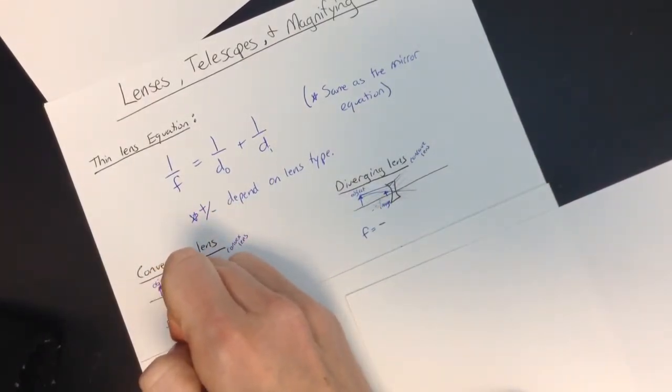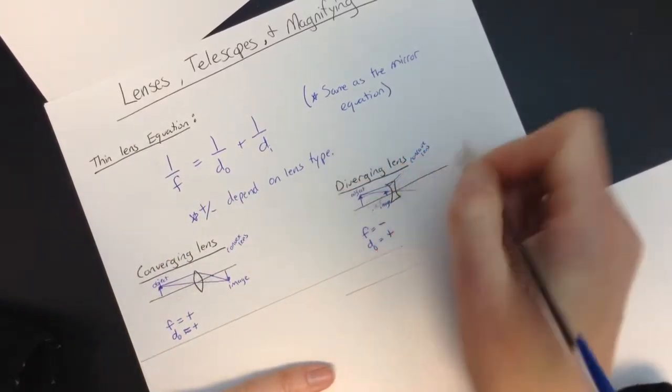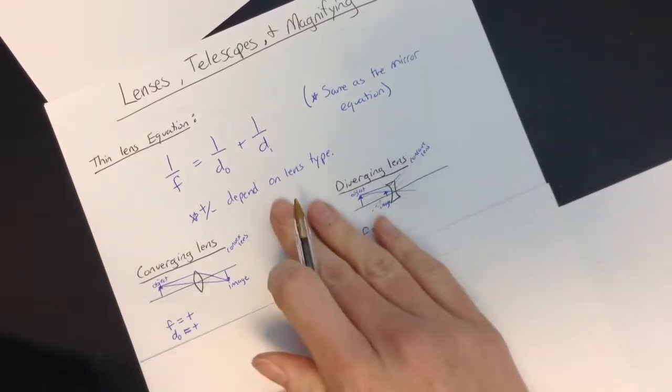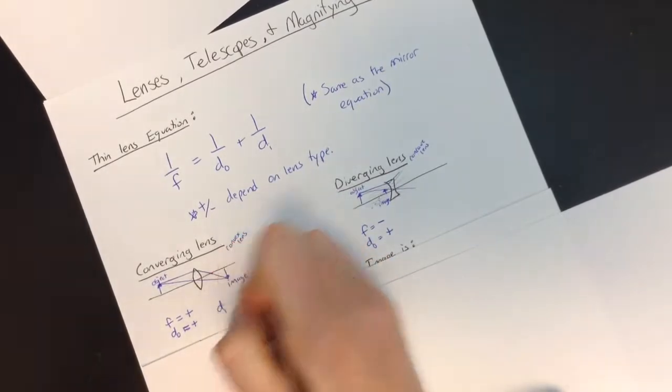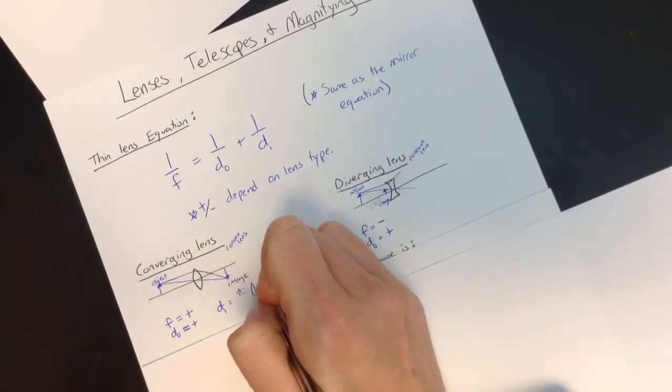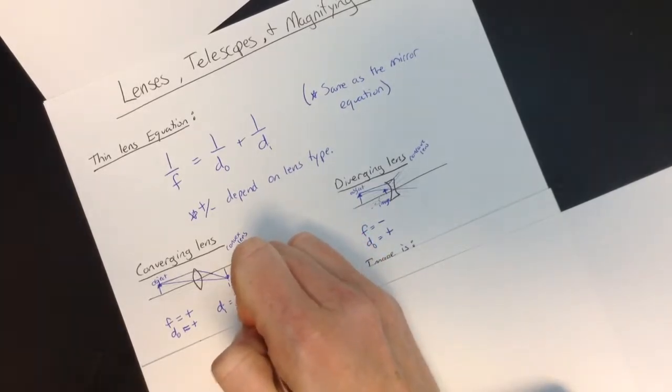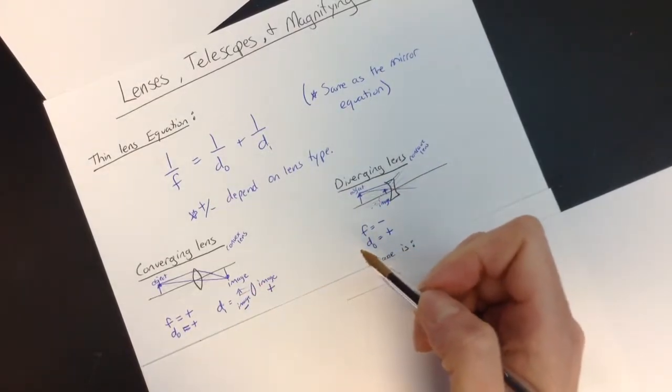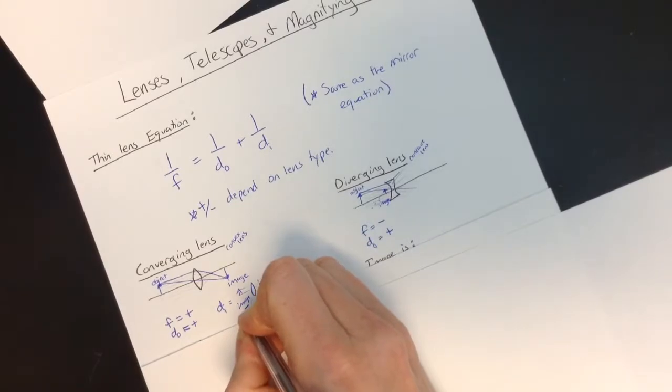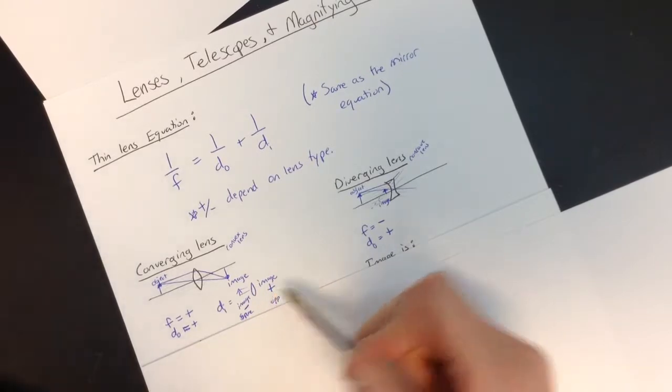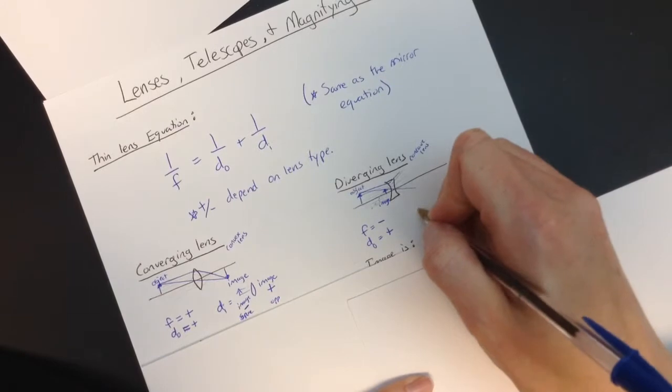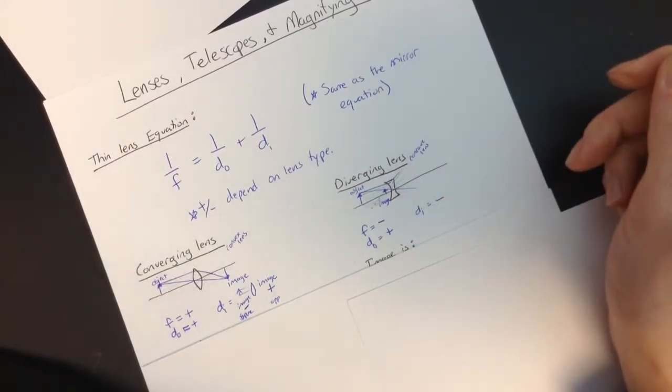So when we're talking about the distances and the positives and negatives, the focal length for a converging lens is always positive, and the focal length for a diverging lens is always negative. And that's true of mirrors also. Here, the object distance is positive, and so is the object distance over here. Also true of mirrors, but the way that we measure the image distance is a little bit different. For the image distance, it's positive if the image is on the opposite side, and if the image is on the same side, it would be negative. So if the light goes through and you could project it, it would be positive, and if not, then it would be negative.